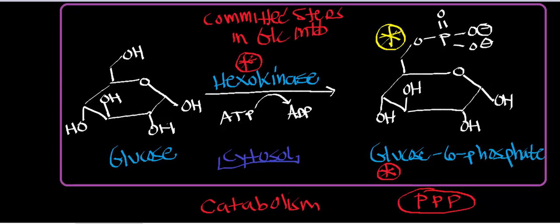Glucose 6-phosphate can go into the pentose phosphate pathway, or it can continue on in glycolysis — the catabolism of glucose — through the enzyme phosphoglucoisomerase. Or it can actually go and synthesize glycogen, whereby glucose 6-phosphate reacts with phosphoglucomutase to give glucose 1-phosphate, and then that gets polymerized. So glucose 6-phosphate is the branch point, and the way we get it from glucose is by using hexokinase.